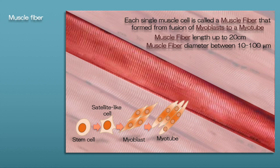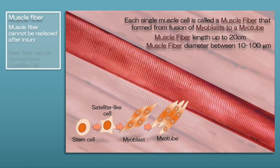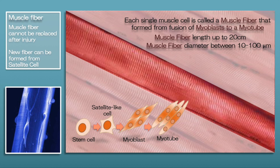If skeletal muscle fibers are destroyed after birth as a result of injury, they cannot be replaced by the division of existing muscle fibers. New fibers can be formed, however, from undifferentiated cells known as satellite cells, which are located next to muscle fibers.